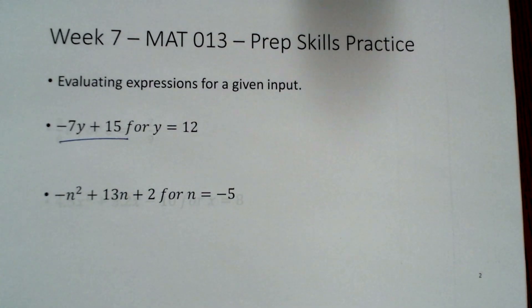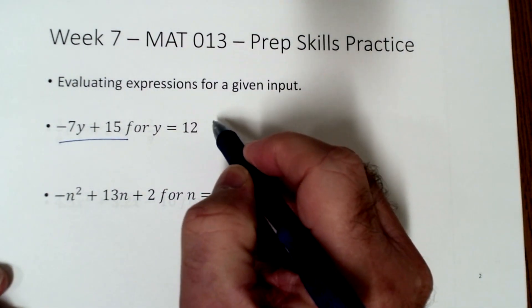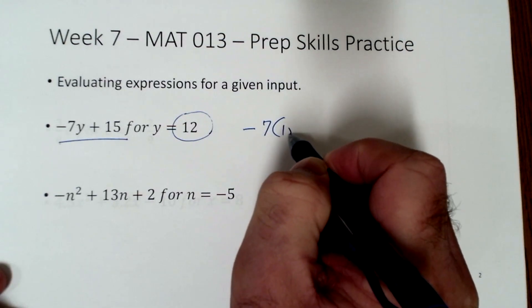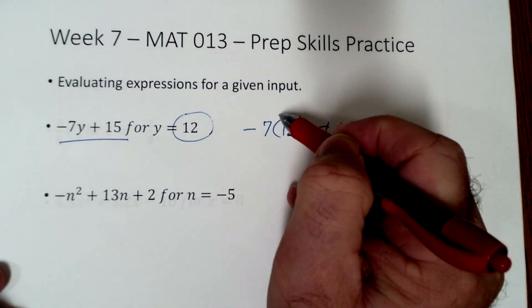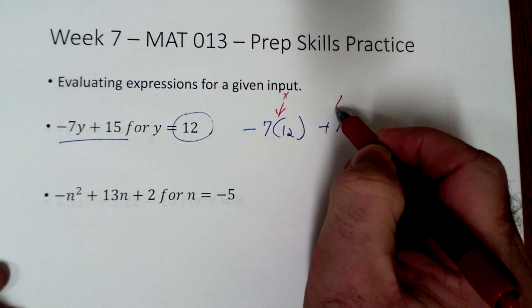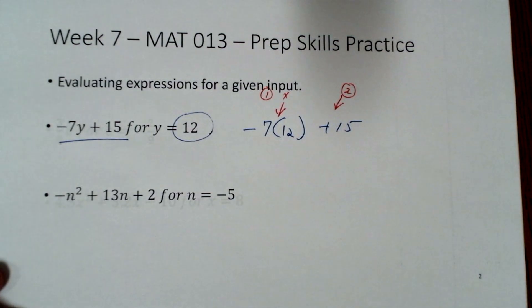Here we've got the expression negative 7 times y plus 15, and we're being asked to evaluate it for y equals 12. So wherever we see y, we put a 12 in. Let's rewrite this and insert 12 for y.